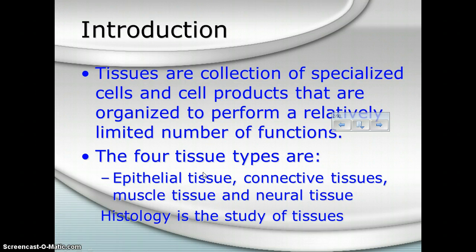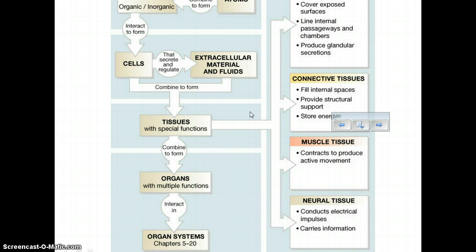There are four basic types: epithelial, connective, muscle, and neural. As we go through these tissues, we are basically engaging in the study of histology. I have a picture here in your notes that I find really helpful because it takes the organization from atoms all the way up through the entire organ system. If you look to the right-hand side of the screen, notice that we have our four types of tissues, and it gives you just the briefest thumbnail sketch of what each type of tissue is responsible for in the body.